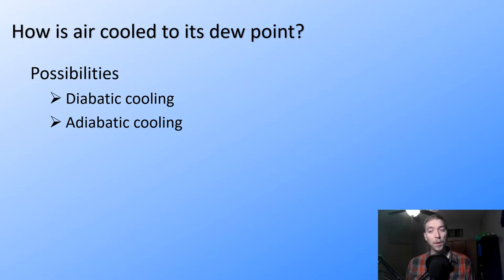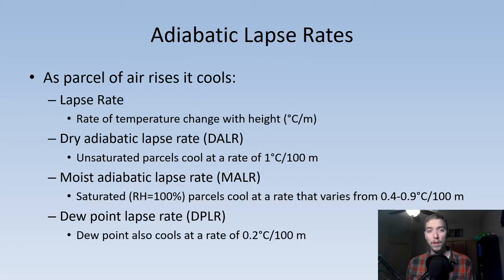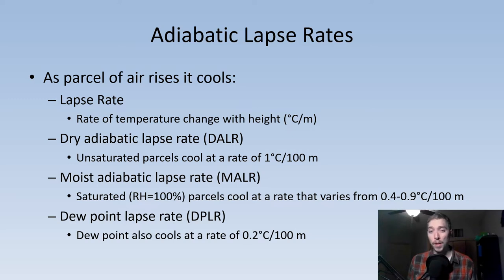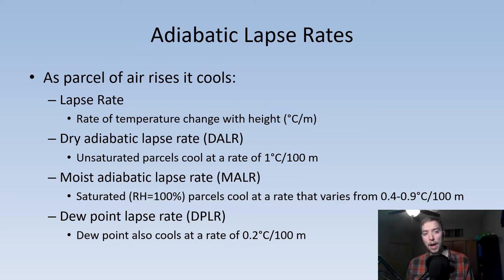Rates of adiabatic change occur differently depending on whether the parcel of air is saturated or unsaturated. The lapse rate is simply the rate of temperature change with height, typically in degrees Celsius per kilometer. The dry adiabatic lapse rate (DALR) applies to an unsaturated parcel, cooling or warming at one degree Celsius for every 100 meters. The moist adiabatic lapse rate (MALR) applies to saturated air at 100% relative humidity, cooling at a variable rate of about 0.4 to 0.9 degrees Celsius per 100 meters.